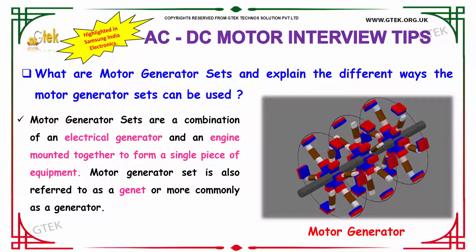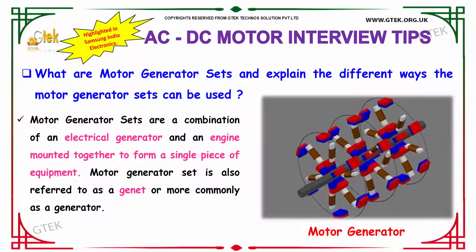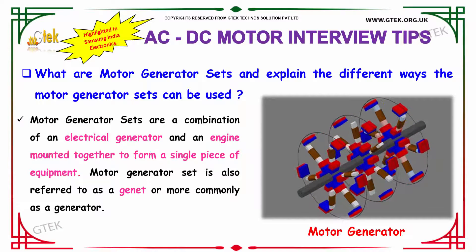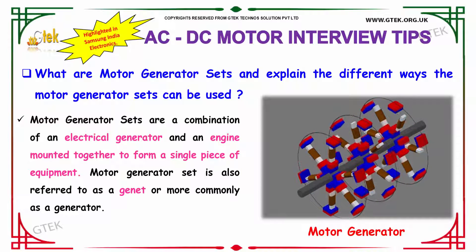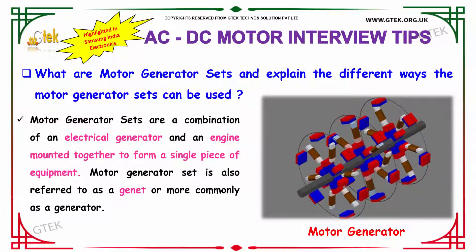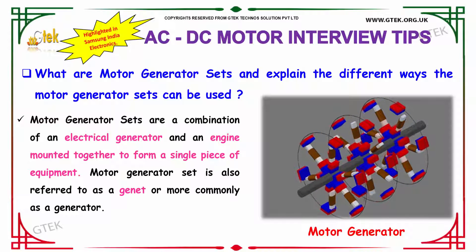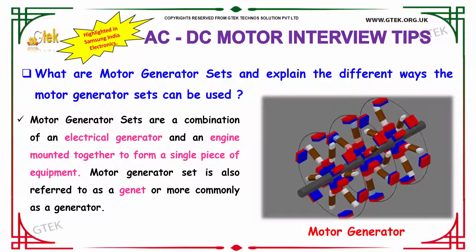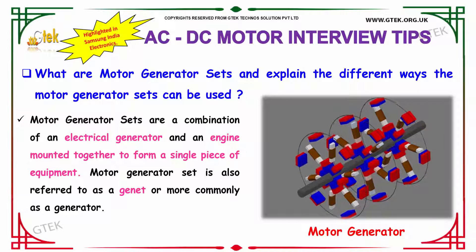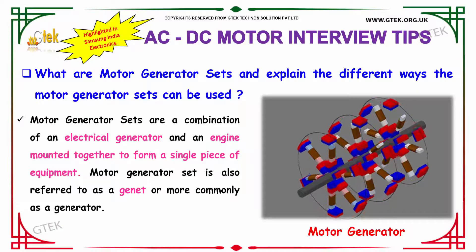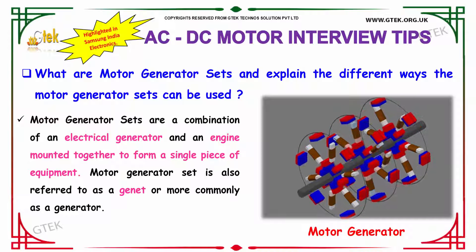What are motor generator sets and explain the different ways they can be used? Motor generator sets are considered to be the combination of an electrical generator and an electric engine which are mounted together to form a single piece of equipment. Motor generator set is also referred to as a genset, or more commonly as a generator. The ways in which a motor generator set can be used are: alternating current to direct current, direct current to alternating current, and alternating current at one frequency to alternating current at another harmonically related frequency.